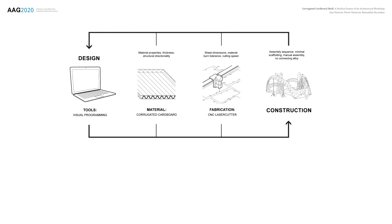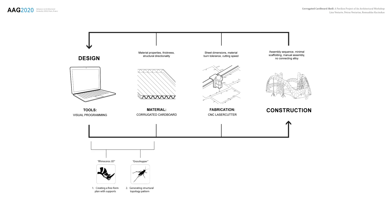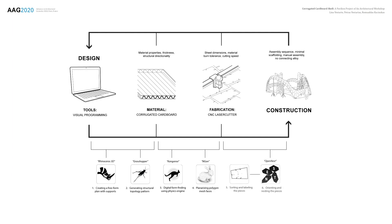For this project we had two main design constraints: the available corrugated cardboard material and laser cutter fabrication. As for the digital tools, we used the Rhinoceros 3D platform together with Grasshopper. The physics engine Kangaroo was used for digital form-finding, and we also used polygonal mesh processing tools NGON and openness tools for orienting and labeling the elements for fabrication and construction.